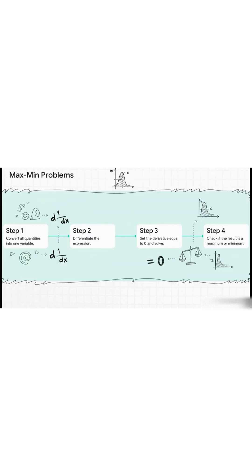Are those max min word problems giving you a headache? Here's the four-step plan to crush them every single time. Step one, get the equation down to just one variable. Step two, take the derivative. Step three, set that derivative equal to zero and solve for the variable. And finally, step four, double check if what you found is a max or a min. This blueprint works every...